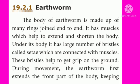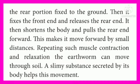During movement, the earthworm first extends the front part of the body keeping the rear portion fixed to the ground. Then it fixes the front end and releases the rear end. It then shortens the body and pulls the rear end forward. This makes it move forward by small distances. By repeating such muscle contraction and relaxation, the earthworm can move through soil.